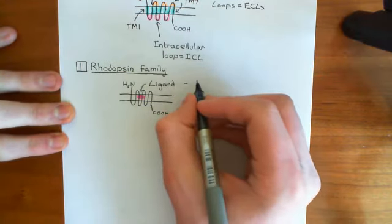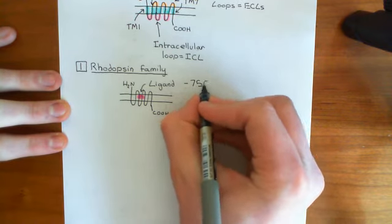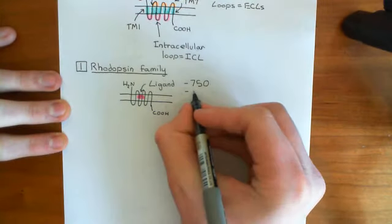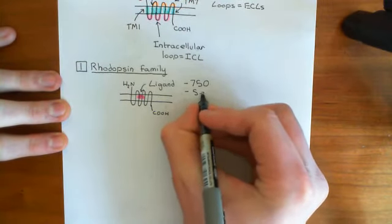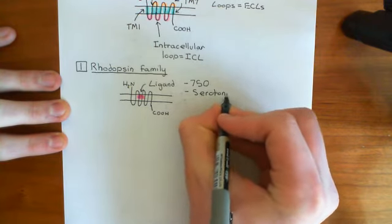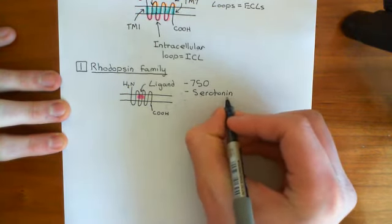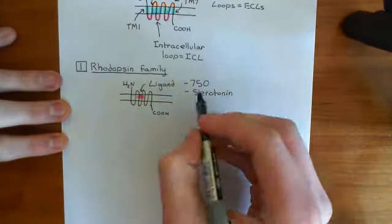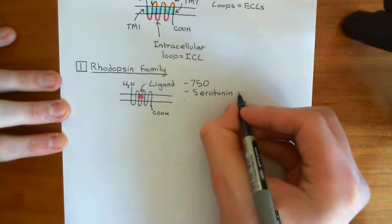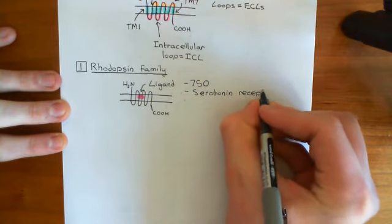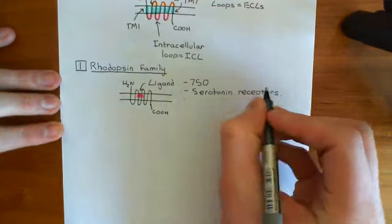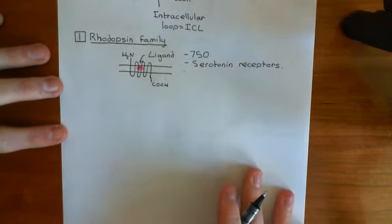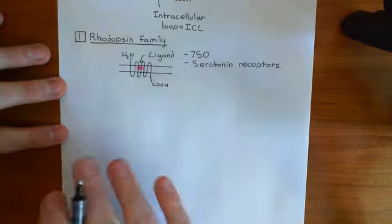Most G-protein coupled receptors fall into this rhodopsin family — around 750 of them. All of our serotonin receptors that are G-protein coupled receptors fall into this category. That excludes the 5-HT3 receptors, which are ligand-gated ion channels. But all the other six serotonin receptor families fall into the rhodopsin family. For completeness, I want to contrast this with the other four families.